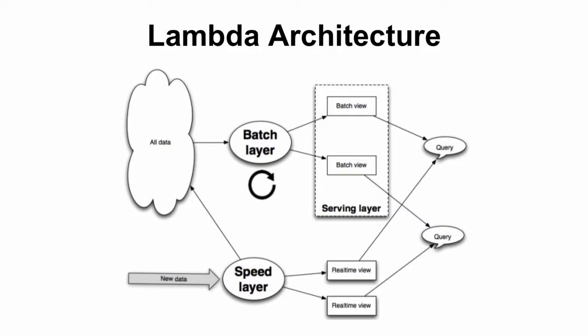The batch layer is the periodic data processing that happens in most organizations. In our case, it's daily data processing — every night, Spark jobs come up and look at yesterday's data, process the log files, and put that data into our serving layer, which is Amazon Redshift. An important concept about the batch layer is that the data it produces is immutable — it is never updated. The key is by day, so you don't ever need to update it; you simply create data for the new day and append it to the existing data.